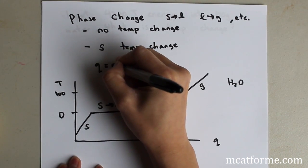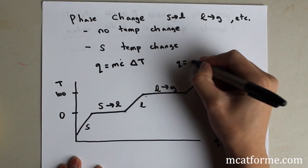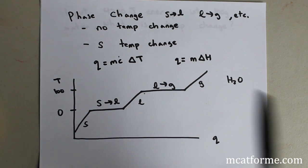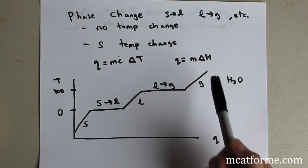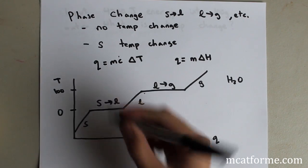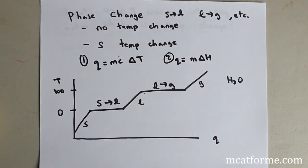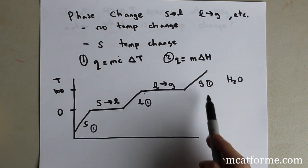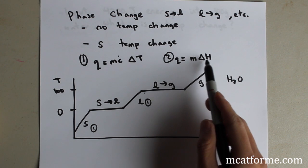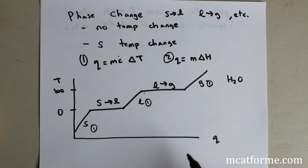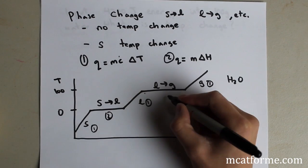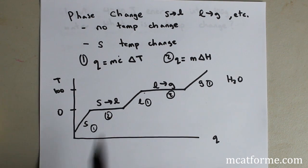There are two equations we need to know for these phase changes: Q equals mcΔT, and Q equals mΔH — where ΔH is enthalpy, described as the heat of fusion or the heat of vaporization. We use Q = mcΔT whenever we have a temperature change, meaning we're within one phase — solid, liquid, or gas. We use Q = mΔH when there's no temperature change, i.e., during a phase transition. The heat of fusion applies to the solid-to-liquid phase change, and the heat of vaporization applies to the liquid-to-gas phase change. M is mass and C is specific heat.